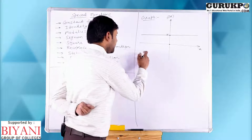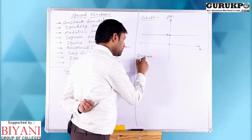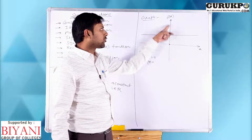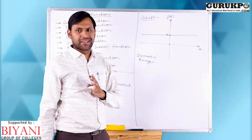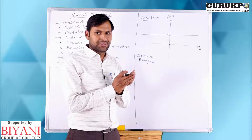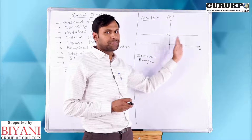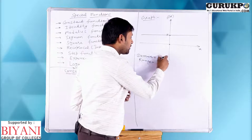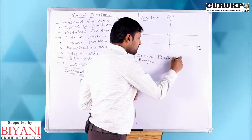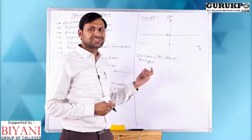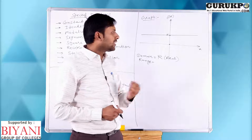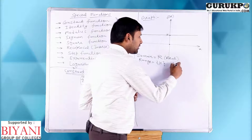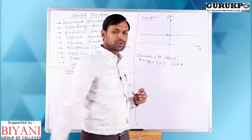Now we discuss domain and range. Domain means possible values of x — the values for which the function is defined. Here x may be anything: 0, positive, negative, or decimal. So domain is R, the real numbers. Range means possible values of f(x). Here if we place anything we always get k, so range is {k}, where k is a real number.